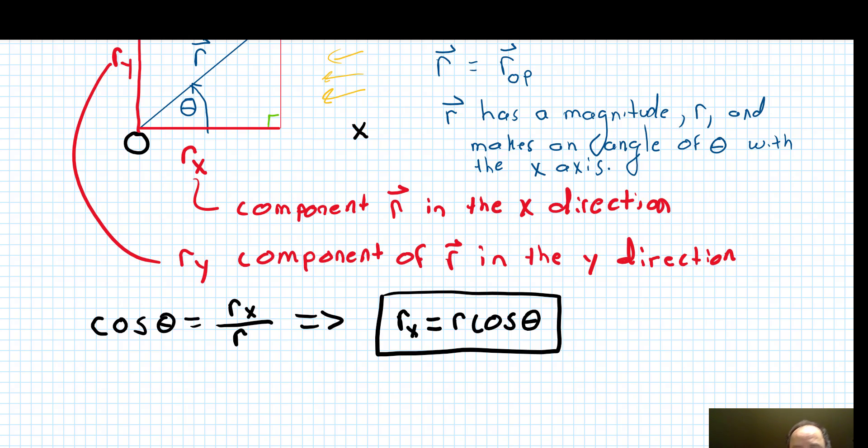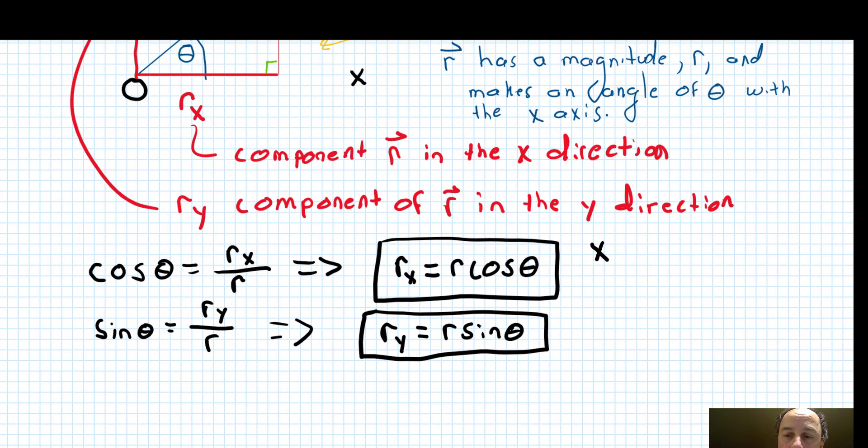And we do the same thing with sine. The projection of r onto the y axis, sine theta is ry over r. Rearranging, the component of r in the y direction gives r sine theta. So this is the x component of vector r and this is the y component of vector r.